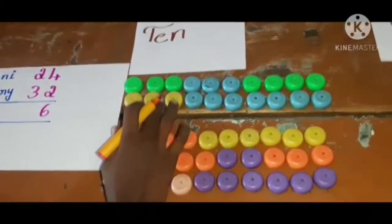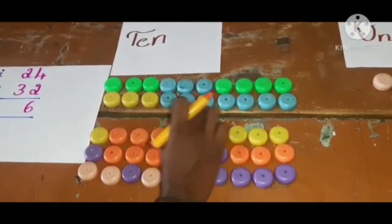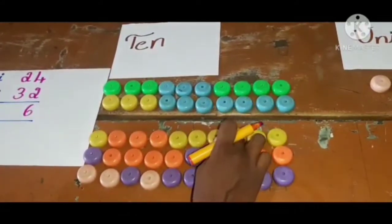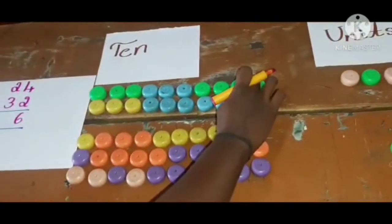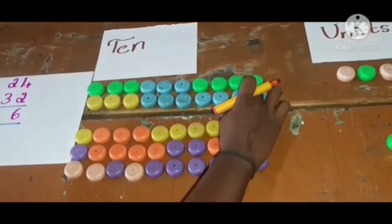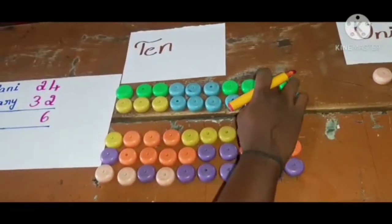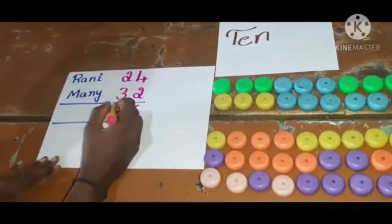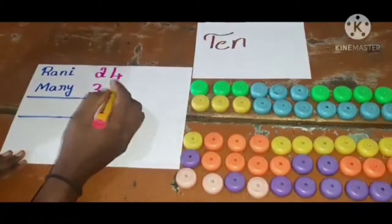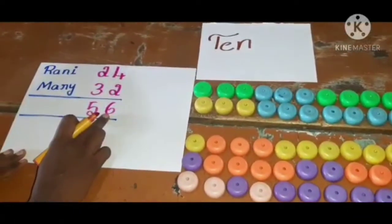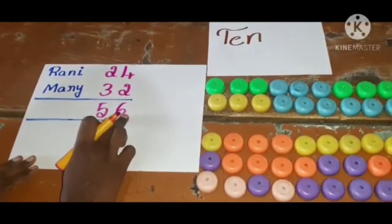Now, you can add tens. So here 2 tens, each line 10 beads. Count now: 1, 2, 3, 4, 5 tens. 10, 20, 30, 40, 50. So 2 plus 3, 5. 5 tens, 50. So 4 plus 2, 6. 2 plus 3, 5. Total, 56.